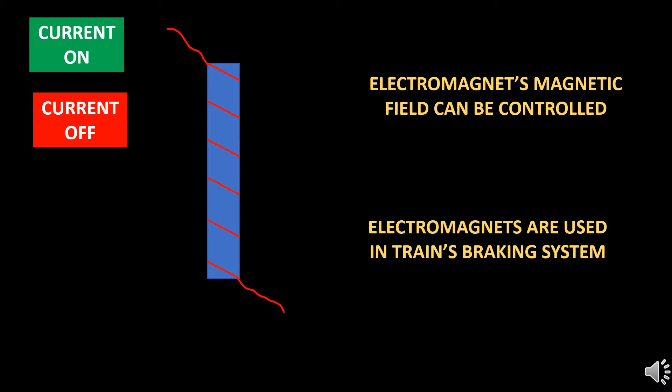Thus unlike permanent magnets which has magnetic field all the time, the electromagnet's magnetic field can be controlled by the current passing through the coil. Thus the electromagnets are used in train's braking system as it gives greater control over the magnetic field generated and hence the braking effect.